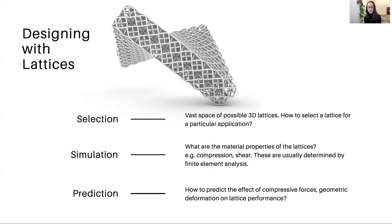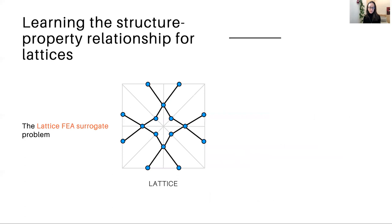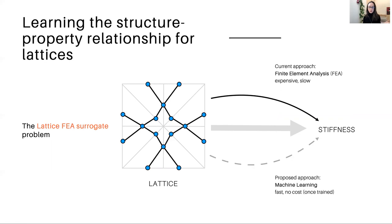And in particular, is there a way to predict the effect of compressive forces or geometric deformation on lattice performance without doing finite element analysis? This was the research question of this project, and we were hopeful that machine learning might have some answers to this. In other words, what we're really interested in doing is learning the structure property relationship for lattices. In this case, the structure is the lattice geometry and the property is its stiffness. So we can think of this as a surrogate for finite element analysis. That's the current approach. It's expensive and slow. And the question is, will this proposed approach of machine learning, will that be better? Of course, it is fast and no cost once trained.